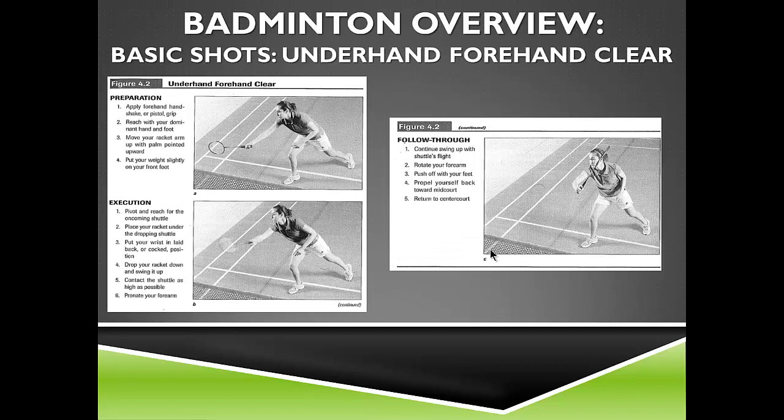For the underhand forehand clear, the trajectory is similar to other clears. The difference from a drop shot is the arc — you hit it high and deep into the back of the court when your opponent is at the net. Use the handshake grip, reaching the dominant hand and foot forward with a same-side step. Pivot and reach for the oncoming shuttle, using wrist action to hit the birdie high and deep. Contact as high as possible, pronate the forearm, and bring it up across the body while pushing off and moving toward mid-court.